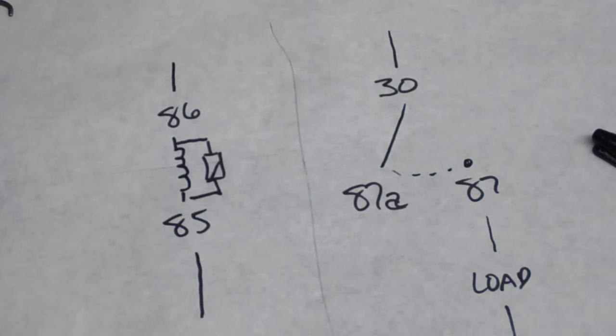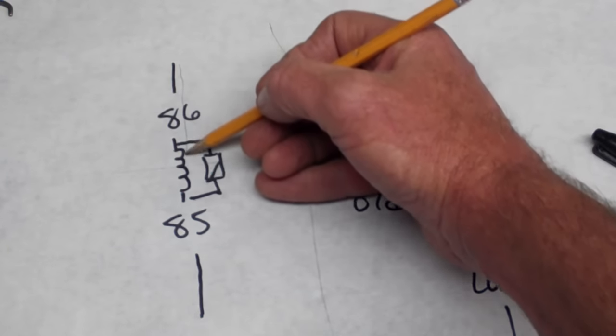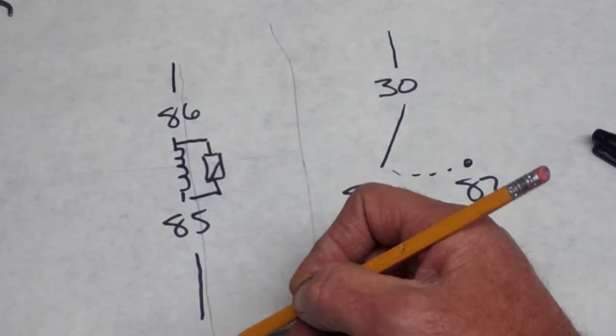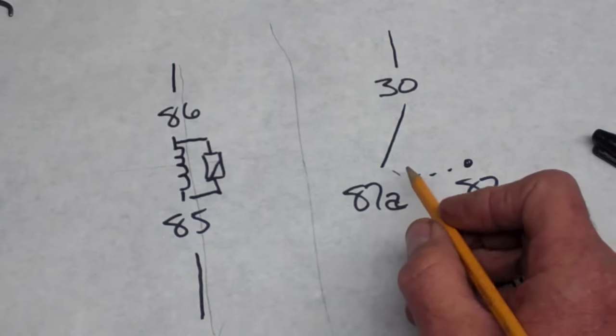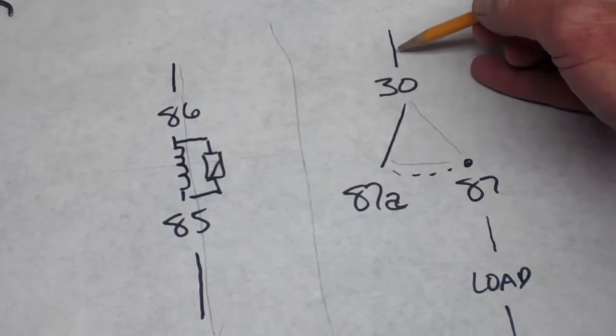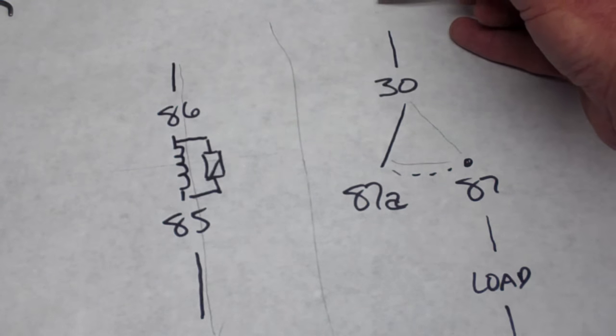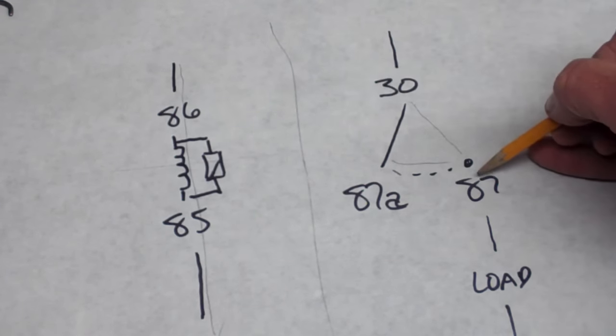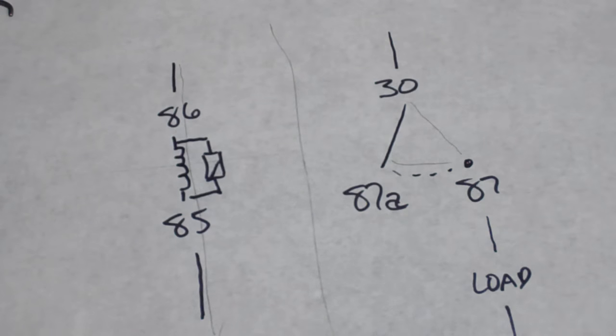When I bring current through 86 and through 85, then what happens is my switch goes from 30 to 87, and I now allow current to go into my load. So let's take a quick look at how that actually works.